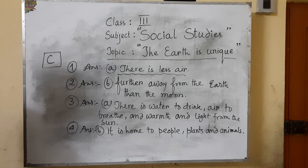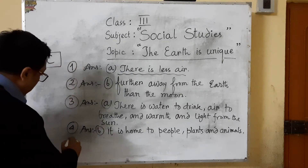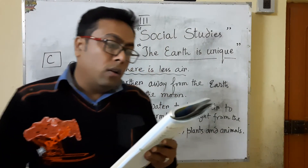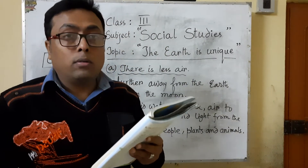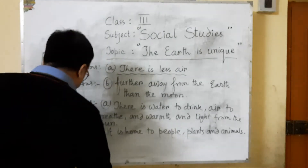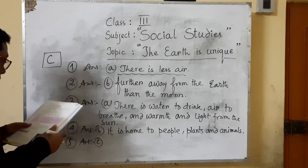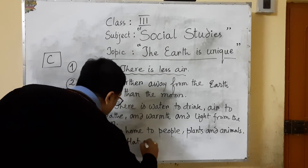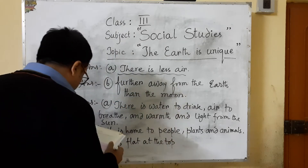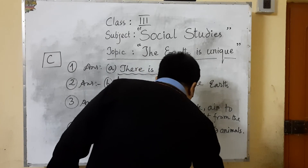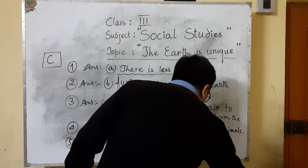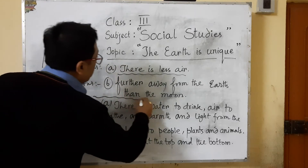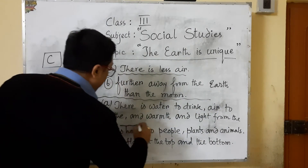Number five: the earth is like an orange because it is soft like an orange, or it is flat at the top and the bottom? The answer is C — it is flat at the top and the bottom. You need to write it along with the question.